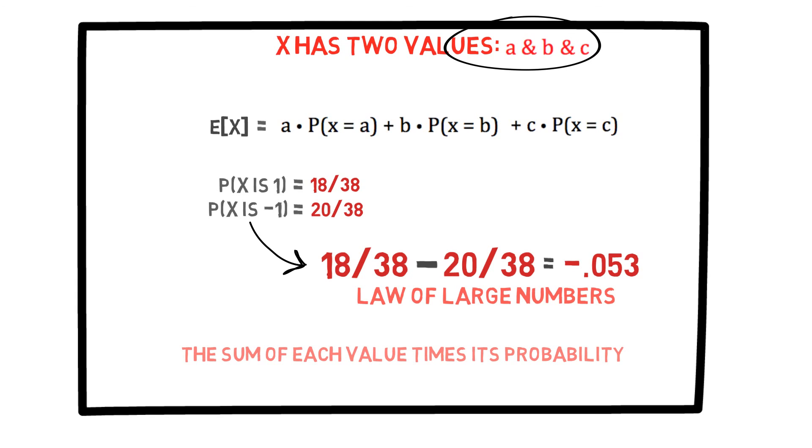The law of large numbers states that, as we repeat the experiment a large number of times, the average value that we observe will be approximately equal to the expected value of the random variable. We will see in upcoming videos, we can take advantage of this law in many situations in everyday life. We'll see you next time.